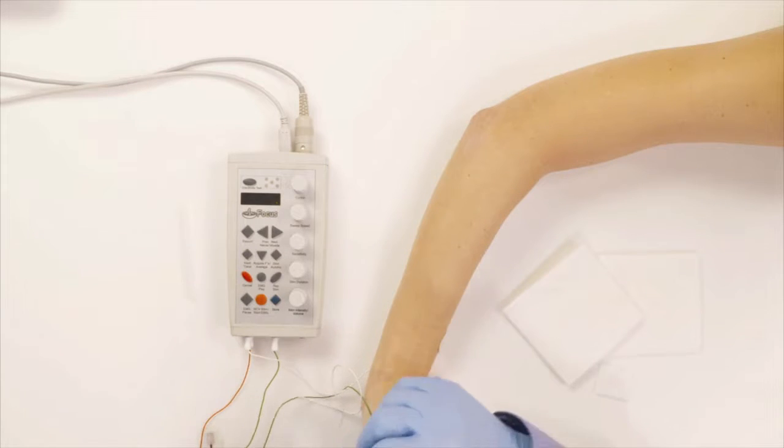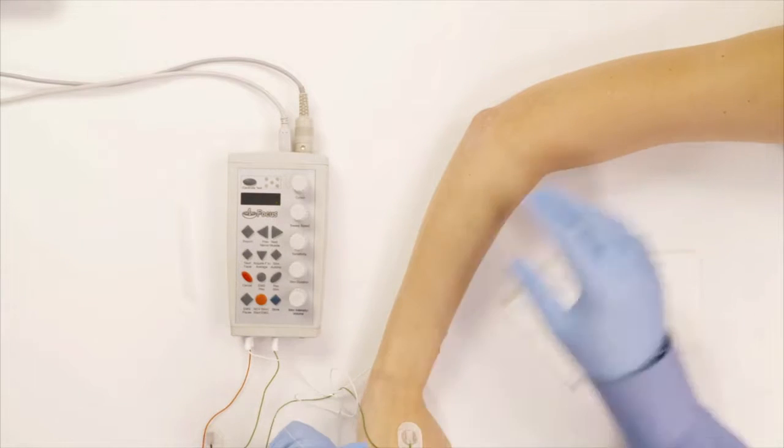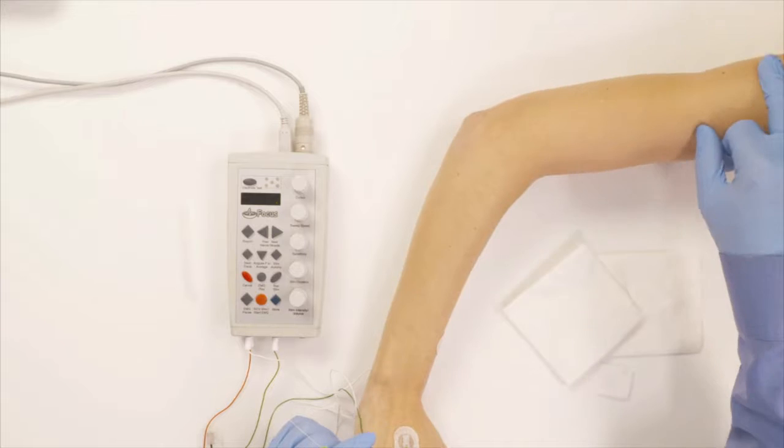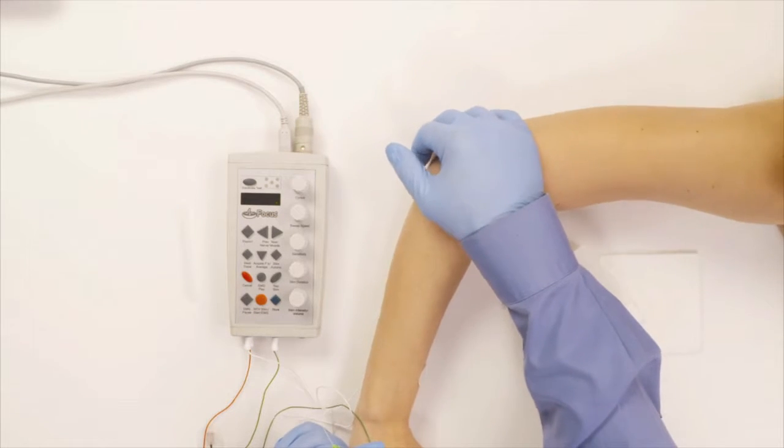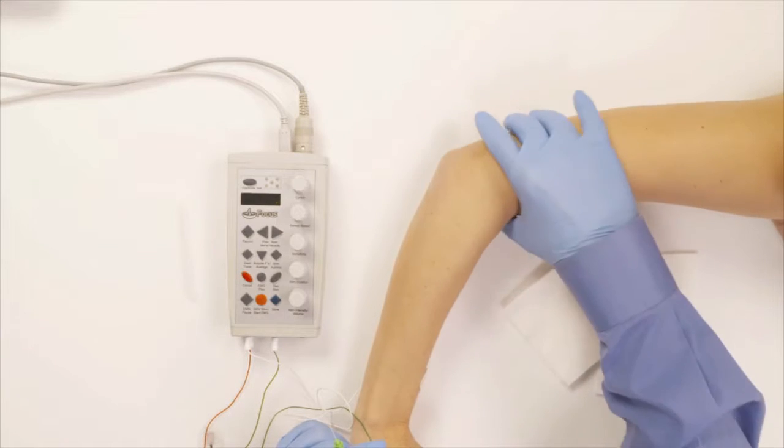Last but not least is the deltoid muscle, and the deltoid is this muscle right by the shoulder here, right here, and what it does is it lifts the shoulder up. So lift your shoulder up and that's how you activate the muscle.